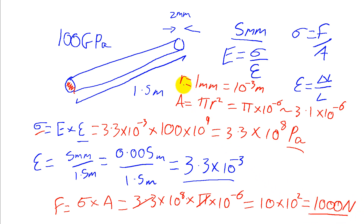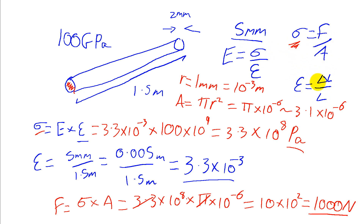So 1,000 newtons applied to this 2mm diameter wire would give us an extension of 5mm, as long as it didn't break. To work out if it would break, we'd need to look at ultimate tensile stress — but that's for another time. This is a nice example of how we can take stress and strain and combine them to get Young's Modulus. With these equations we can find Young's Modulus given force, area, change in length, and original length — or just stress and strain. Alternatively, we can find force applied, area, change in length, original length, stress, and strain through algebraic manipulation.